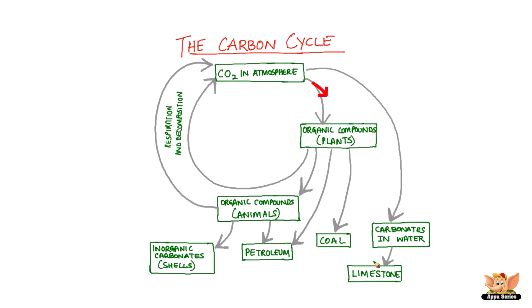Carbon dioxide in the atmosphere is used by plants in the process of photosynthesis. The plants are consumed by animals. When the plants and animals respire, or when they die and decompose, carbon dioxide is released to the atmosphere.